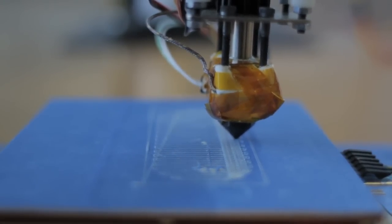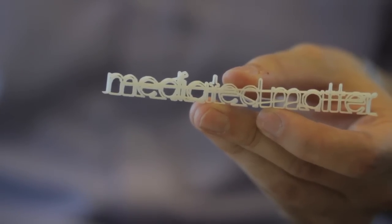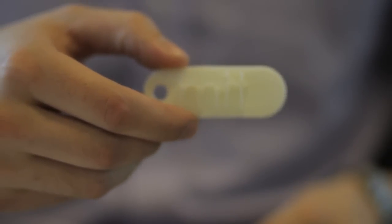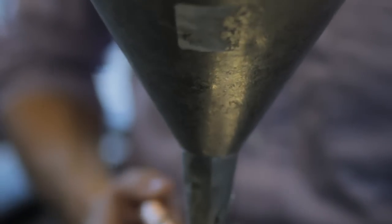For instance, right now it has a modified MakerBot head on it which prints ABS plastic making parts like this. We can attach different heads though, for instance this is a high-density polyethylene head and we can put in cut-up milk jugs and actually print with recycled plastic.